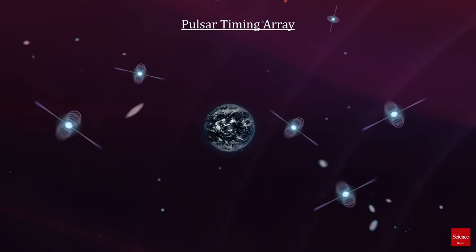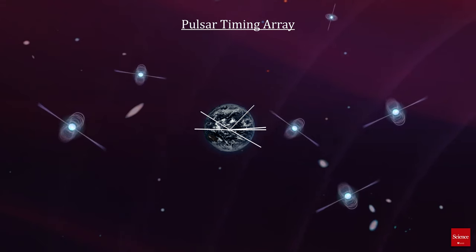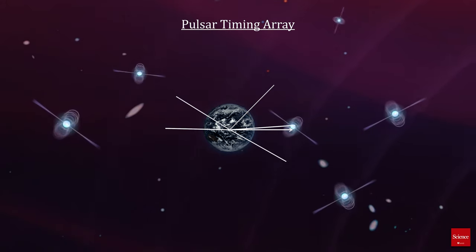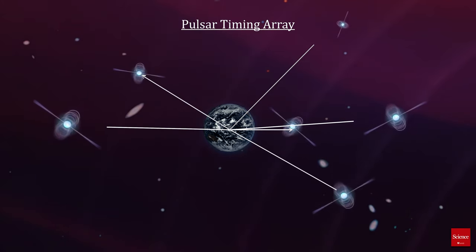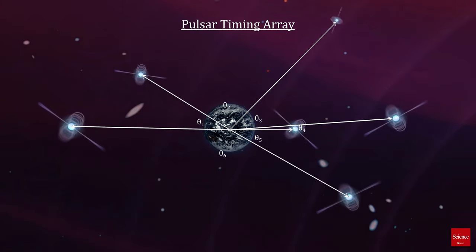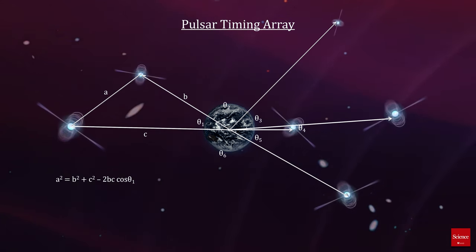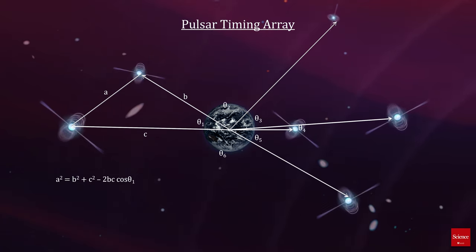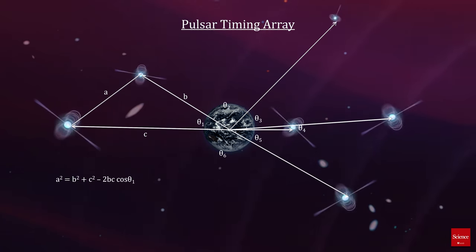Another way to find gravitational waves with pulsars is to use an array of them and measure the distances to and the viewing angles between all of them over time. That's enough to compute the distances between them as well. As gravitational waves pass through the array, we should see deviation patterns that are correlated across all the pulsars in the array.